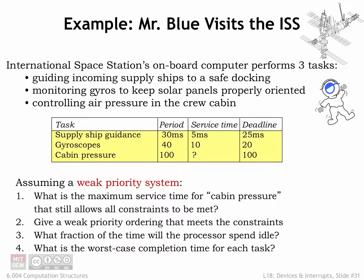Let's finish up by looking at two extended examples. The scenario for both examples is the control system for the International Space Station, which has to handle three recurring tasks: supply ship guidance, gyroscope control, and cabin pressure. For each device, the table shows us the time between successive requests, the service time for each request, and the service deadline for each request.